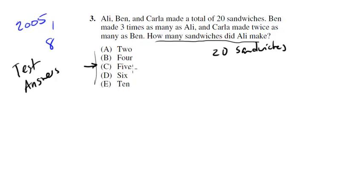You'll see what I mean in a second. So if Allie made five sandwiches, how many did Ben make? Well Ben made three times as many as Allie, so that means Ben made 15. And Carla made twice as many as Ben, so that means Carla made 30. Now does this make sense as an answer?